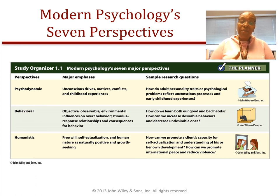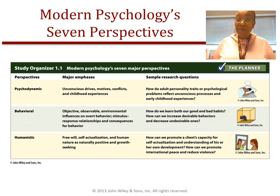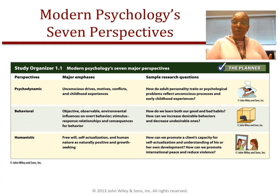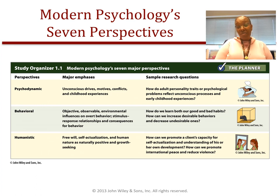The behavioral perspective is strictly about the actions you take — a behaviorist doesn't focus much on emotions, how you feel, or thinking, though there is cognitive behavioral as an offshoot. With a pure behaviorist, they look at objective, observable actions and how the environment might impact overt behaviors. Research questions here include how one might learn both good and bad habits, and how to increase good behavior while eliminating unwanted ones.